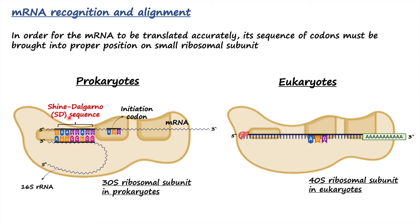In eukaryotes, the mRNA does not have a Shine-Dalgarno sequence. Instead, the 40S ribosomal subunit is assisted by eukaryotic initiation factor 4 (eIF4), which binds to the 5' cap of the mRNA and then moves along the mRNA until it encounters the initiation codon. This is how eIF4 positions both the mRNA and the small ribosomal subunit in eukaryotes.